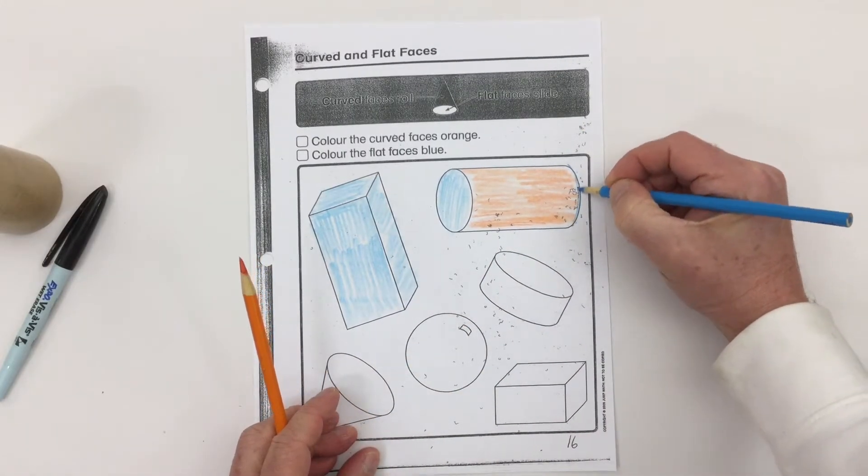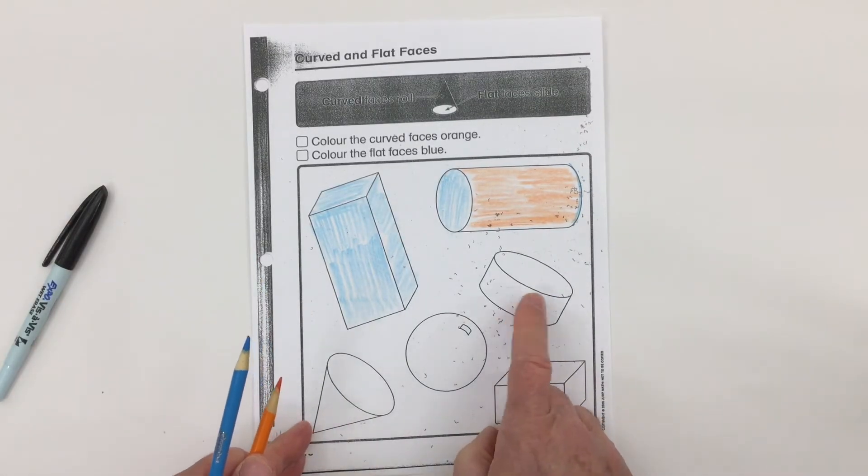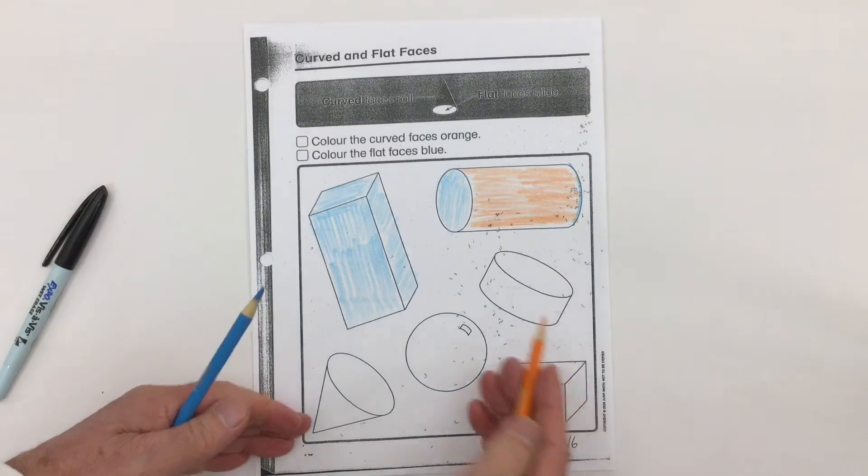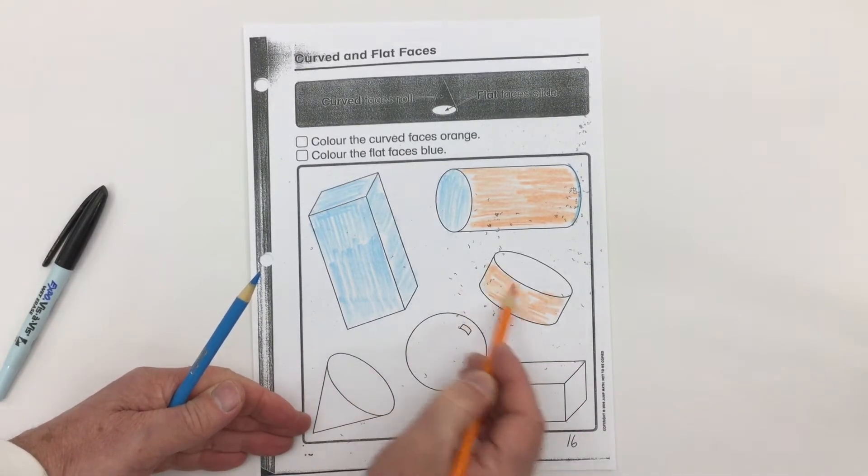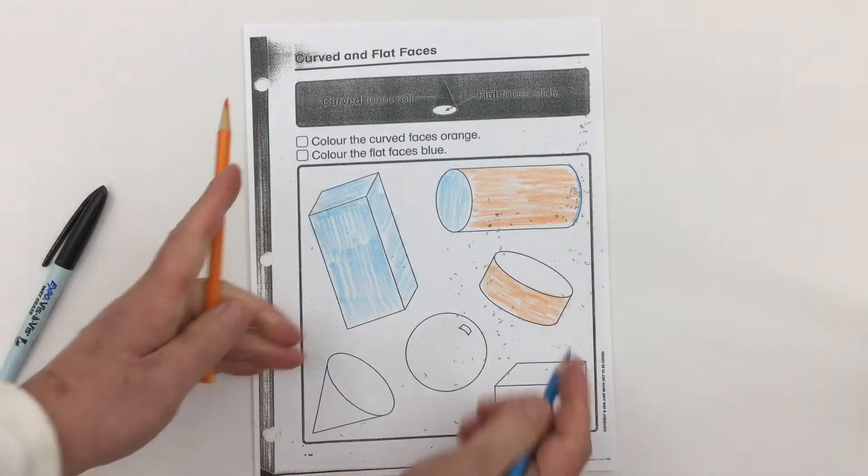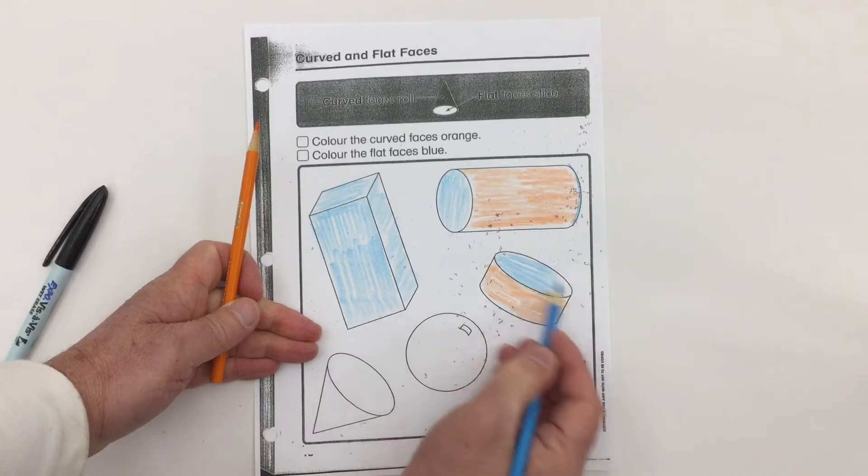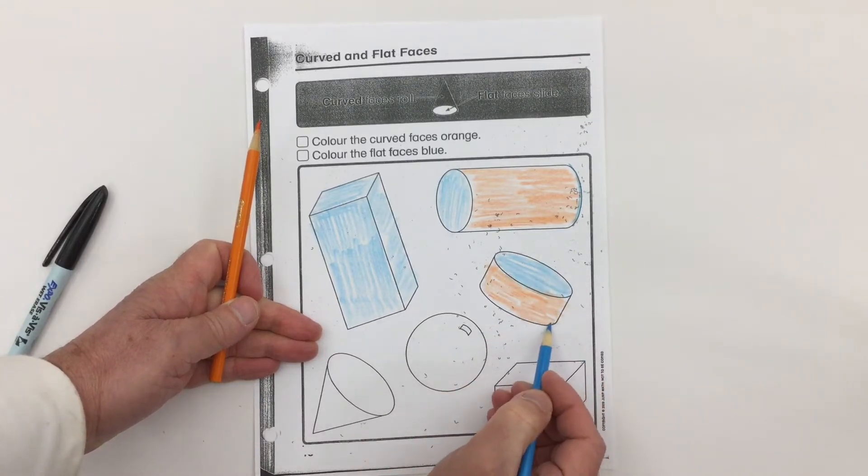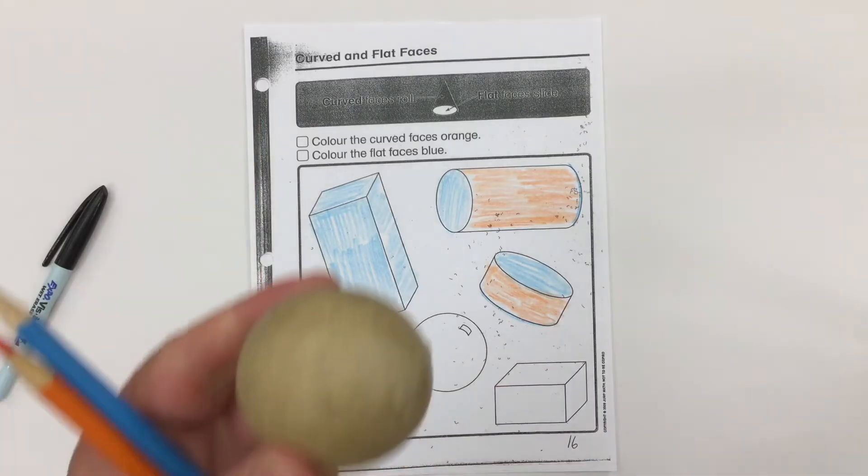We also have another cylinder that's smaller, so it's going to be the same thing: curved orange face but flat blue face. And again, we know this underside down here would be blue.